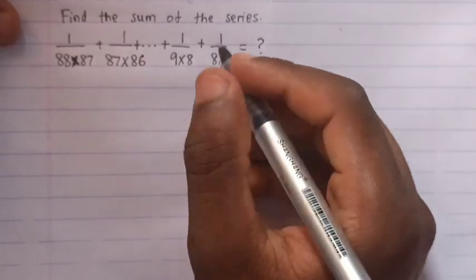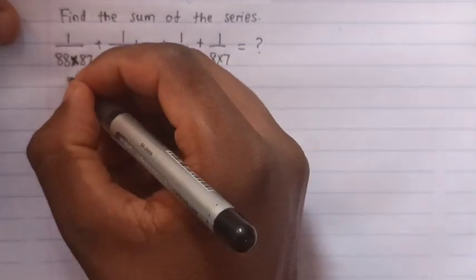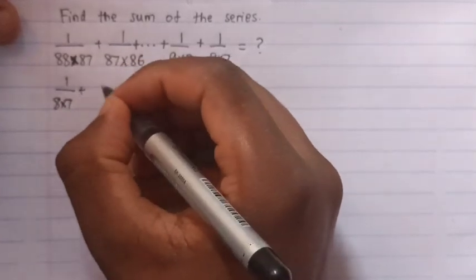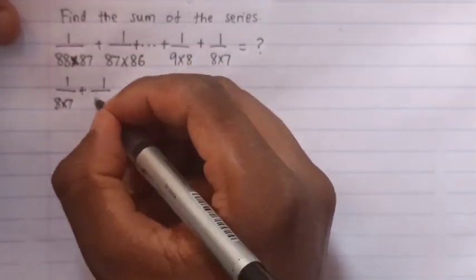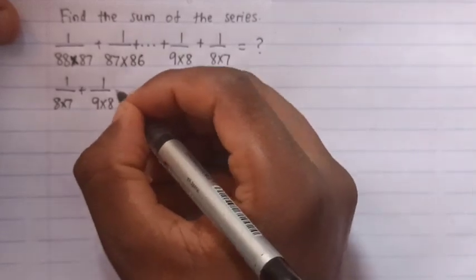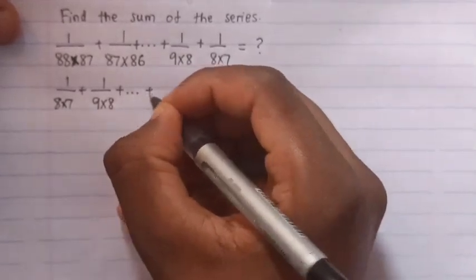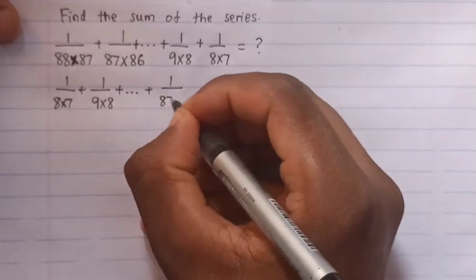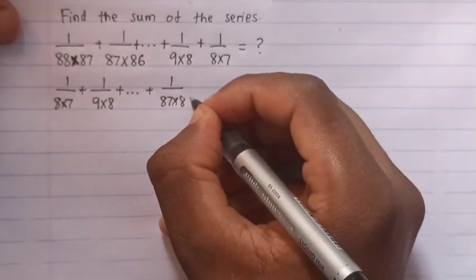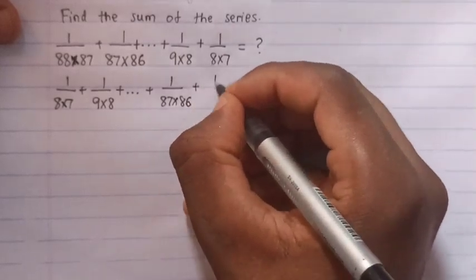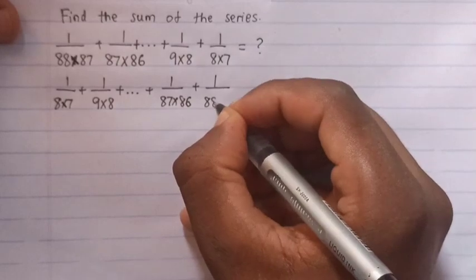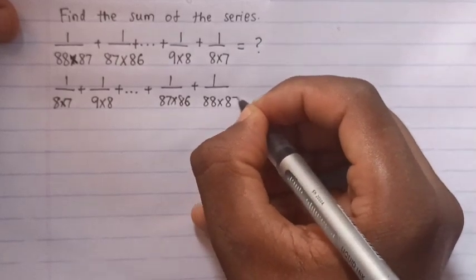The largest is this one, so here it will be 1 over 8 times 7, plus 1 over 9 times 8, plus, plus 1 over 87 times 86, plus 1 over 88 times 87.